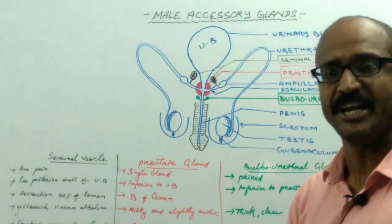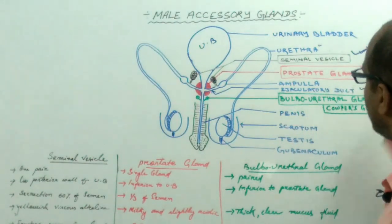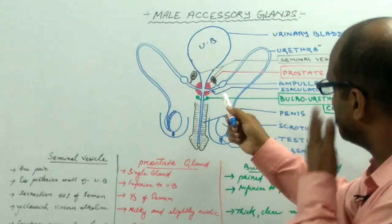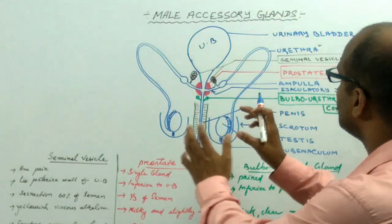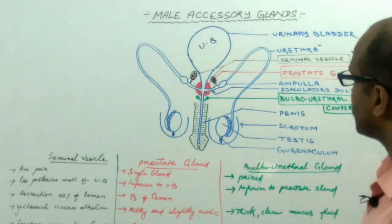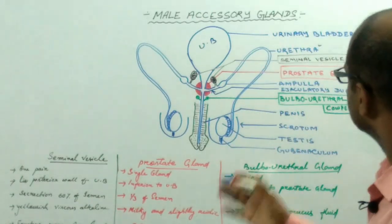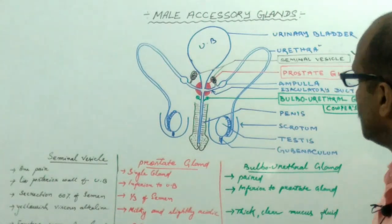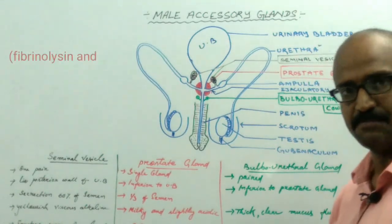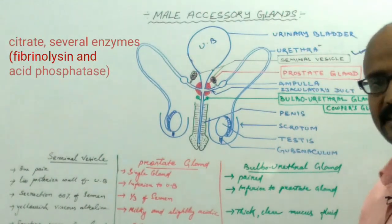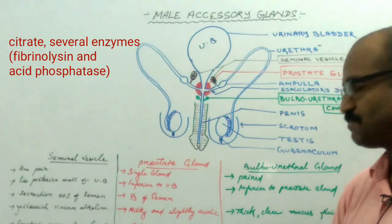That is why it helps for the detection of rape cases. Now coming to the prostate gland. The prostate gland is present inferior to the urinary bladder, and some portion of the urethra is surrounded by the prostate gland. The secretion of the prostate gland accounts for one-third of the semen volume, and the secretion is milky and slightly acidic because it contains citrate and several enzymes like fibrinolysin and acid phosphatase.